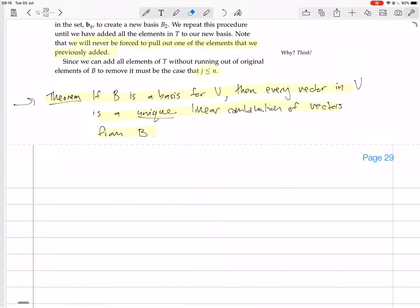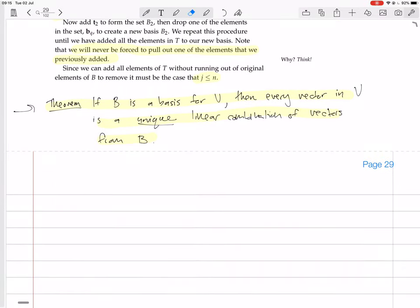The theorem is: if B is a basis for V, then every vector in V is a unique linear combination of vectors from B. This is really the essence of a basis to me - it gives you a way of expressing every vector in the vector space in a unique way.